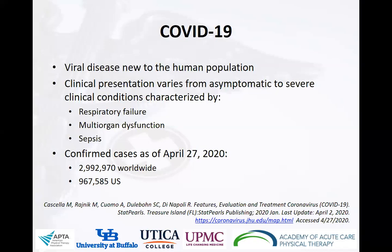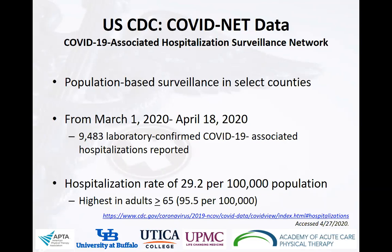As of April 27th, there were nearly 3 million cases of COVID-19 worldwide and almost 1 million in the U.S. alone. In the U.S., the CDC's COVIDNET — short for Coronavirus Disease 2019 Associated Hospitalization Surveillance Network — conducts population-based surveillance for laboratory-confirmed cases of COVID-19-associated hospitalizations. COVIDNET includes information from nearly 100 counties in a total of 14 states already involved in reporting data to the CDC through the Emerging Infections Program and the Influenza Hospitalization Surveillance Project.